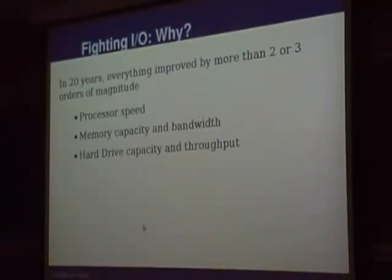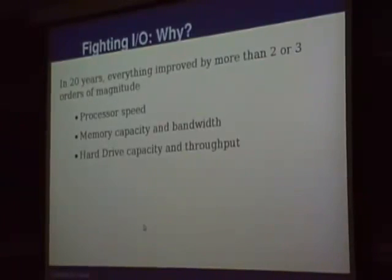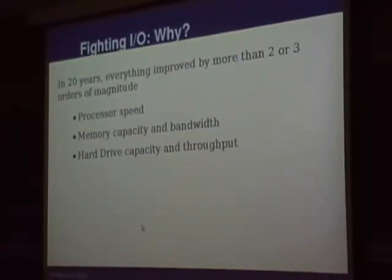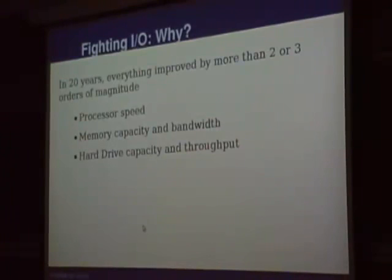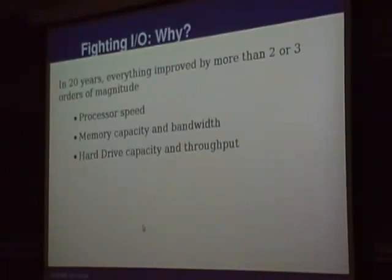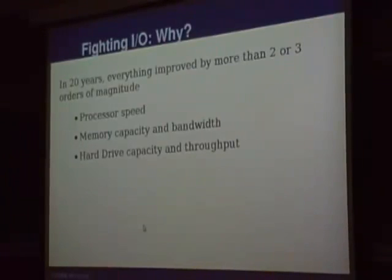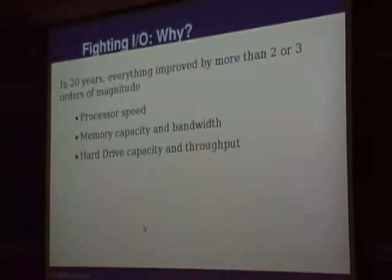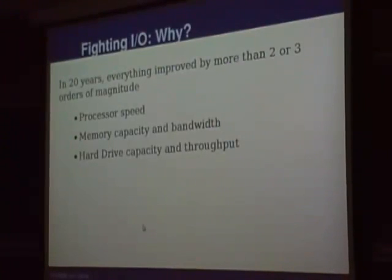Twenty years ago I had my first real PC — one with a memory management unit — and it was fast at the time. But PCs nowadays are really, really, really faster. Processor speed by then was tens of millions of instructions per second; now you can count in tens of thousands of millions. Memory capacity: twenty years ago you could count in megabytes, now in gigabytes. Memory bandwidth was maybe one gigabit per second, now it's more like two hundred, three, four, five hundred gigabits per second.